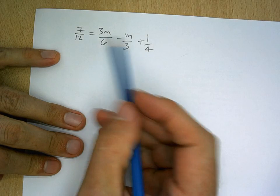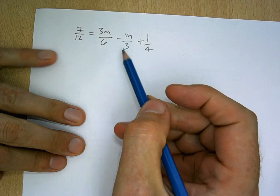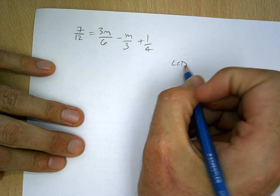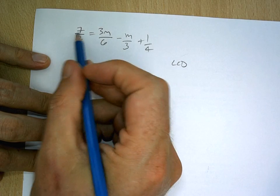And we're going to be solving for m, but we need to get rid of all these denominators on the bottom. So the first step is looking for what's called the lowest common denominator that all of these can multiply into. In this case, it happens to be 12.